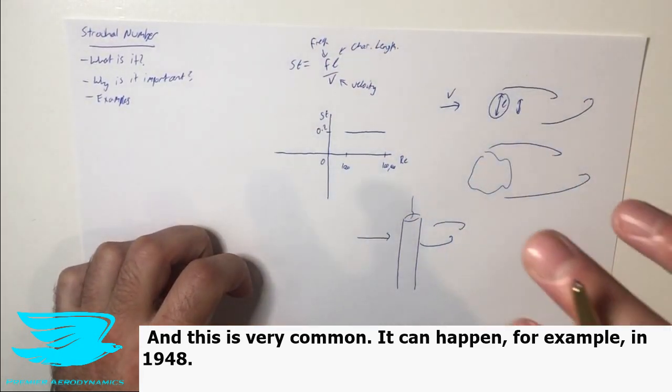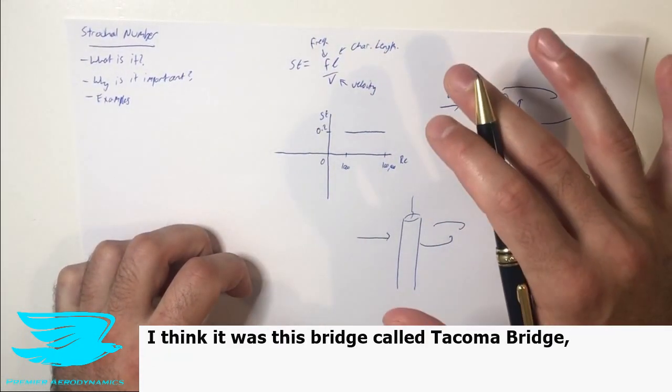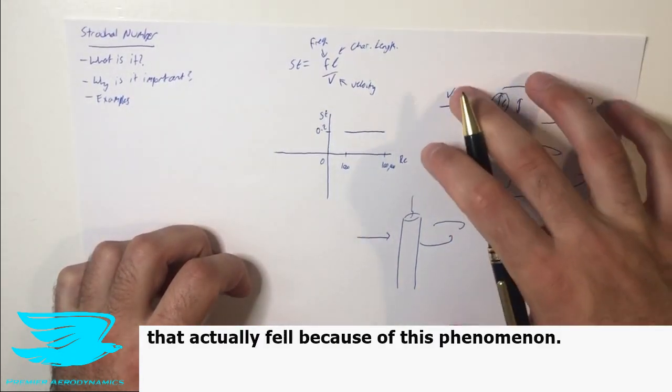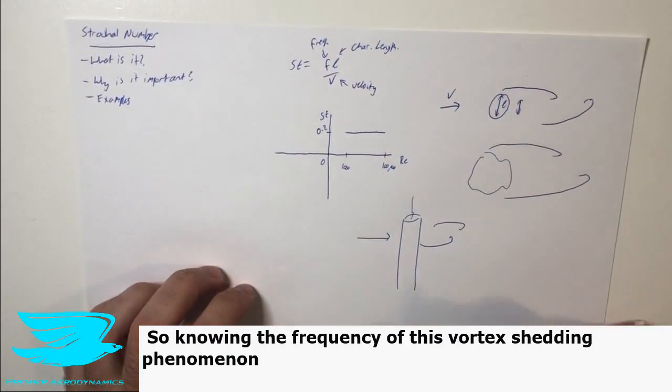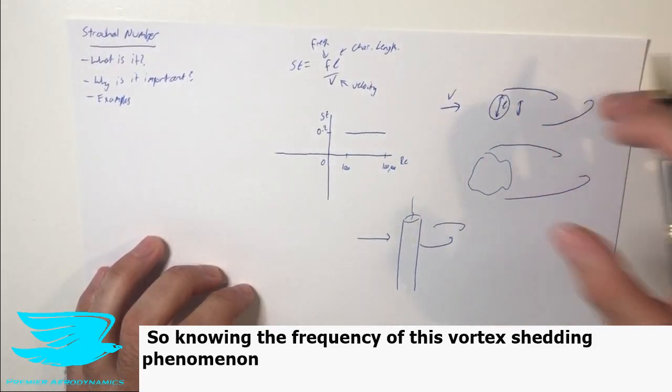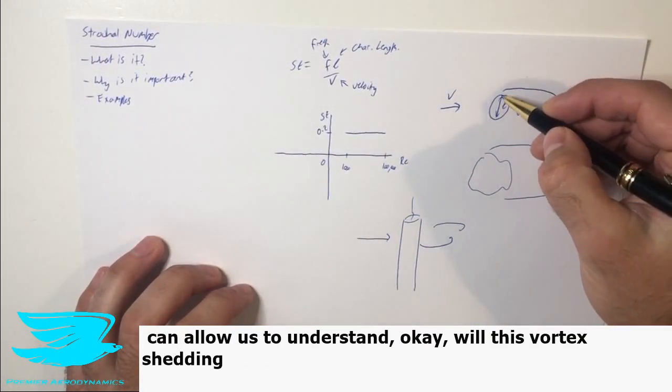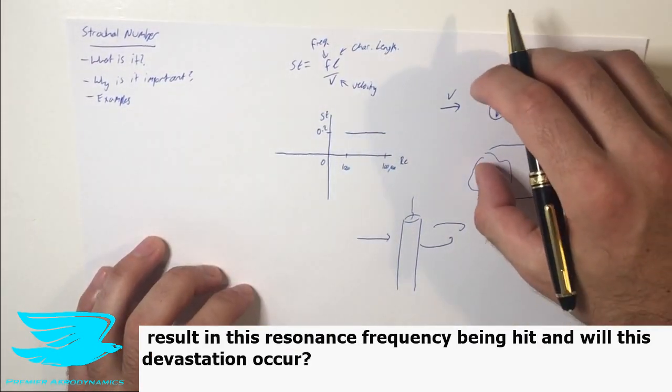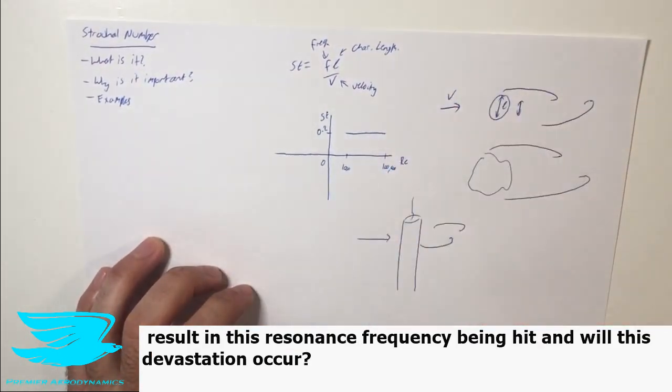And this is very common. It can happen, for example, in 1948, I think it was, this bridge called Tacoma Bridge, that actually failed because of this phenomenon. So knowing the frequency of this vortex shedding phenomenon can allow us to understand, okay, will this vortex shedding result in this resonant frequency being hit and this devastation occurring?